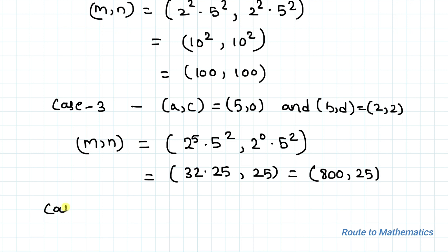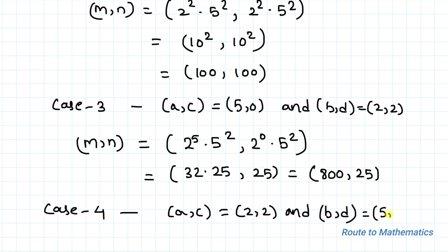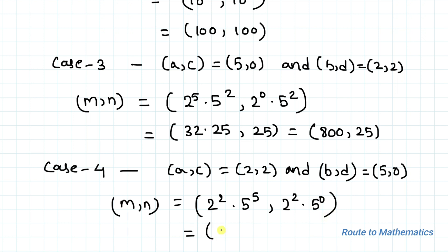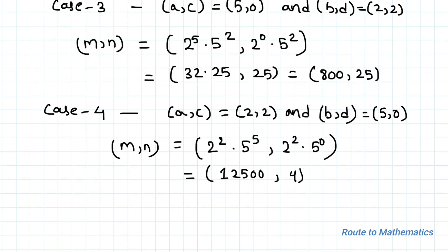Case 4: Take (a, c) = (2, 2) and (b, d) = (5, 0). Then m = 2² · 5⁵ = 4 · 3125 = 12500, and n = 2² · 5⁰ = 4. So (m, n) = (12500, 4) is another solution.